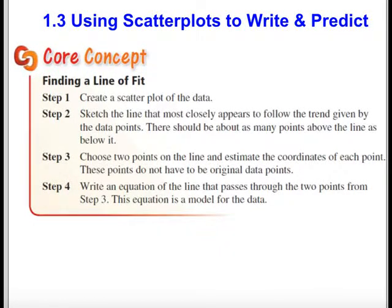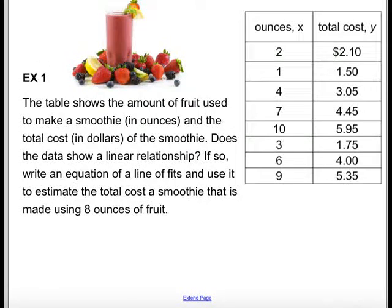We're going to do a series of two examples. The first example is for a smoothie company. The table shows the amount of fruit used to make a smoothie in ounces and the total cost in dollars of the smoothie. Does the data show a linear relationship? If so, write an equation of a line of fits, also known as a line of best fit or a line of regression, and use it to estimate the total cost of a smoothie that is made using 8 ounces of fruit.